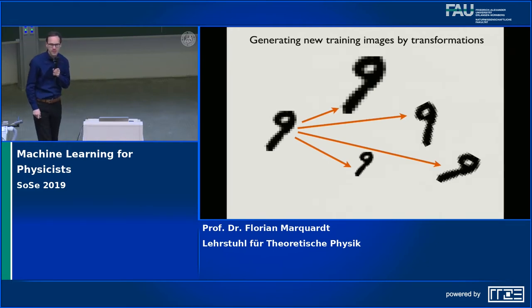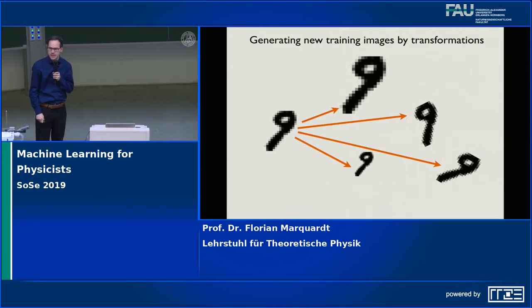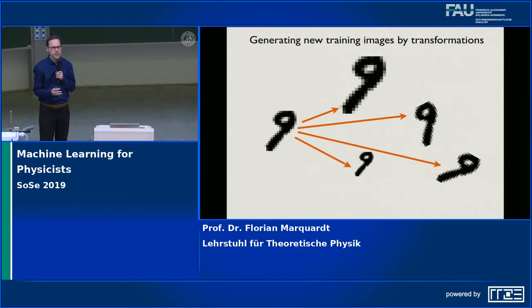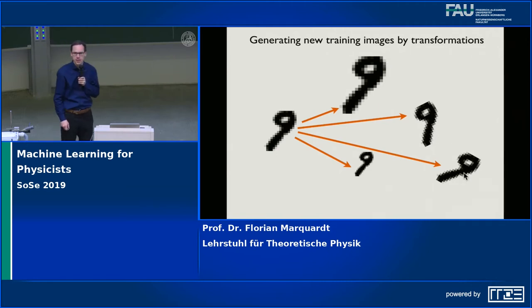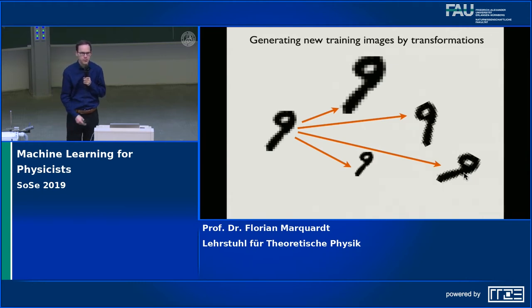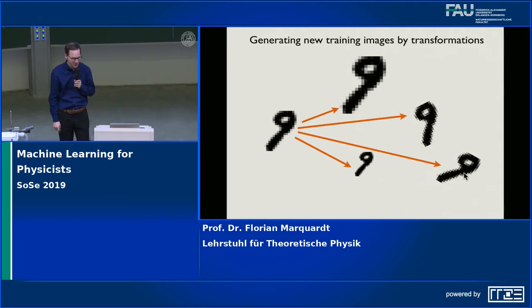The other technique is generating new data. If your labels are independent under geometric deformations of the picture — which is quite often the case — you can adopt this. For our handwritten digits, you can take a picture of a nine, scale it up, rotate it, move it around, and the label should always remain the same. This is more generally true: if you have a picture of a cat and rotate it a little, it is still a picture of a cat.